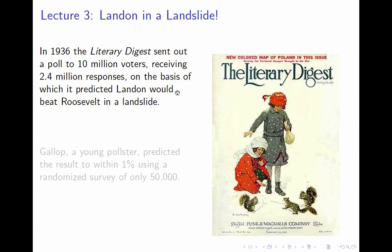This is Lecture 3 of Math 217. I want to begin the lecture with a little bit of an anecdote from 1936. This is the Literary Digest, one of the very popular magazines of the time. In 1936, the Literary Digest sent out by mail a poll to 10 million voters. They got back mailed responses from 2.4 million voters, which was a pretty large percentage of all voters in the national election coming up. On the basis of their responses, they predicted that Landon would beat Roosevelt in a landslide.